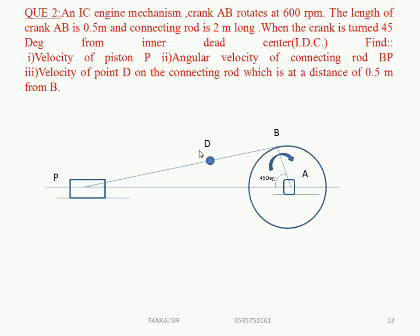Now there is another numerical. In an IC engine mechanism, crank AB rotates at 600 RPM. The length of crank AB is 0.5 m and the connecting rod BP is 2 m long. When the crank is turned 45 degrees from IDC (inner dead center), find: the velocity of piston P, the angular velocity of connecting rod BP, and the velocity of point D on the connecting rod which is 0.5 m from point B.